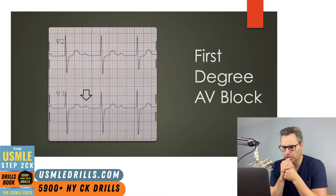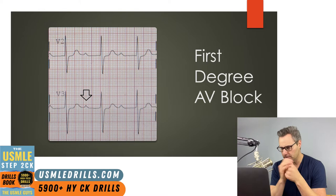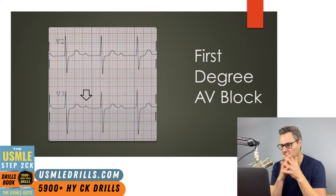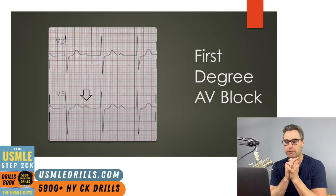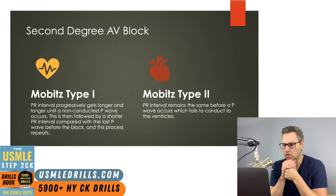Here is an ECG of a first degree AV block. You can see a delay greater than 0.2 seconds in the PR interval — that constitutes a first degree AV block. There is always a P wave before each QRS complex and a QRS after each P wave, so the PR interval prolongation is the only abnormality here.